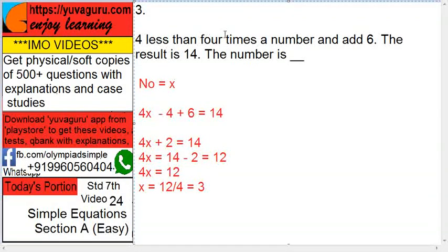Therefore 4 times 4, 4 less, 4x minus 4, add 6 plus 6, result is 14, so 14. So minus plus, minus 6 minus 4 is 2. 4x plus 2 equals 14.